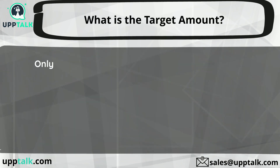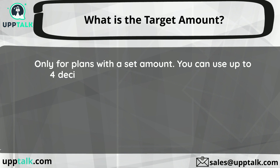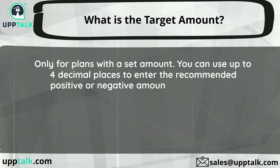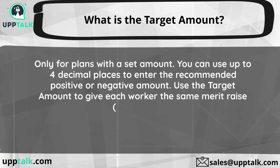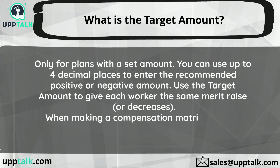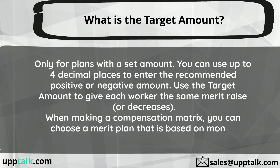What is the target amount? Only for plans with a set amount, you can use up to 4 decimal places to enter the recommended positive or negative amount. Use the target amount to give each worker the same merit raise or decrease. When making a compensation matrix, you can choose a merit plan that is based on money.